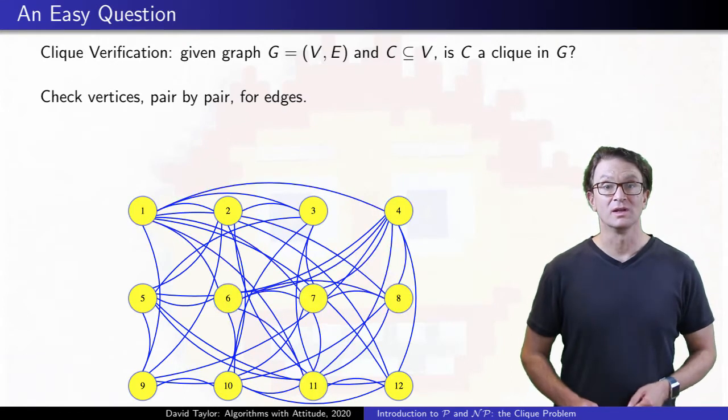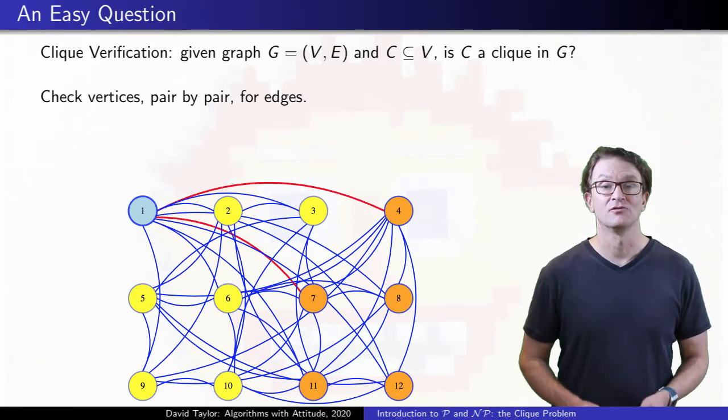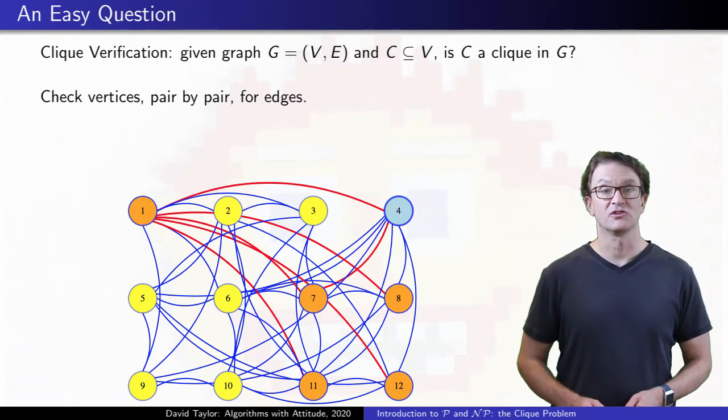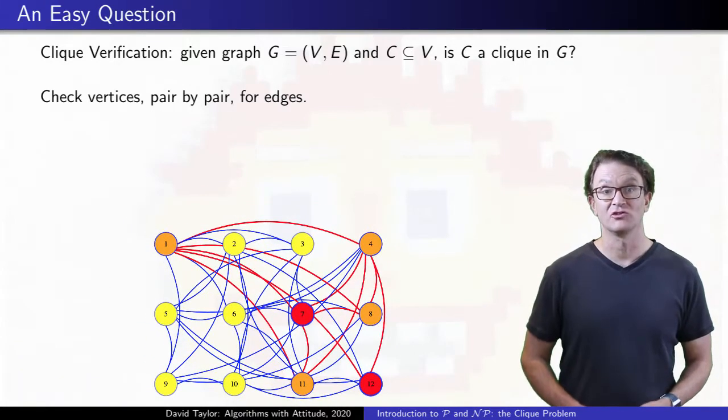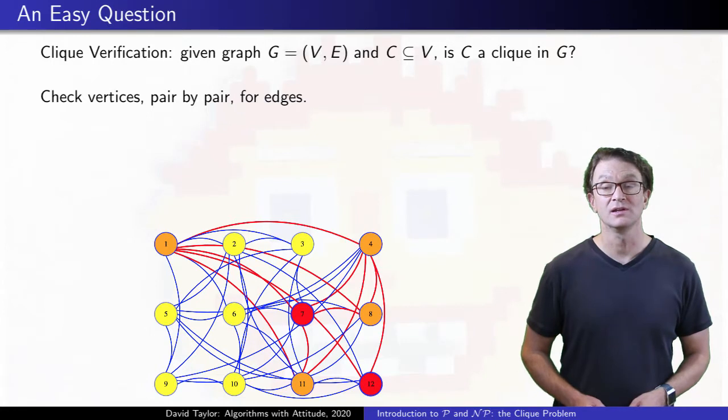If it is a clique, we get through the entire set and verify it. If somebody gives us a set that isn't a clique, when we get to a pair of vertices that has no edge, we figure out it isn't a clique.